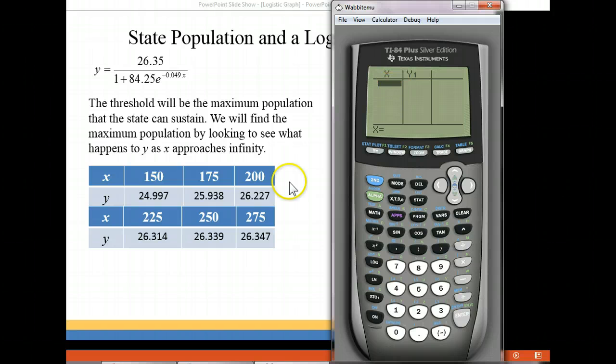So I want to analyze the graph at 150 years after 1900. So I'm going to put in 150 and hit enter, and it gives me out this number 24.997. So that's 24,997,000 residents in the year that's 150 years after 1900. So that would be the year 2050. And then you're going to do the same thing for 175 and you get out these numbers. So that's where I get these numbers from. These are estimates for future populations of this particular state. So it looks like these numbers are approaching a specific number. It looks like it's closing in on 26.35. So 26.35 is our numerator. That's kind of the number that this whole graph is approaching as x goes to infinity.